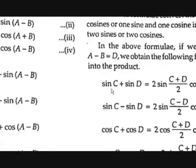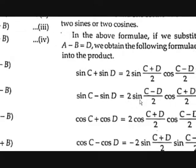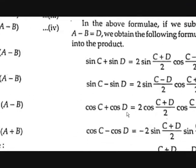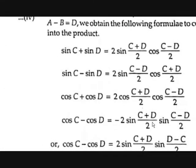Using that substitution, we get the following formulas: sin C + sin D = 2 sin[(C+D)/2] cos[(C−D)/2]; sin C − sin D = 2 sin[(C−D)/2] cos[(C+D)/2]; cos C + cos D = 2 cos[(C+D)/2] cos[(C−D)/2]; and cos C − cos D = −2 sin[(C+D)/2] sin[(C−D)/2]. If you observe, the last one has a negative sign.